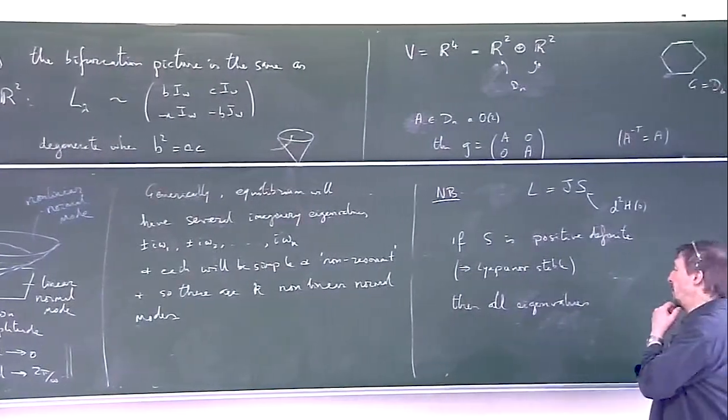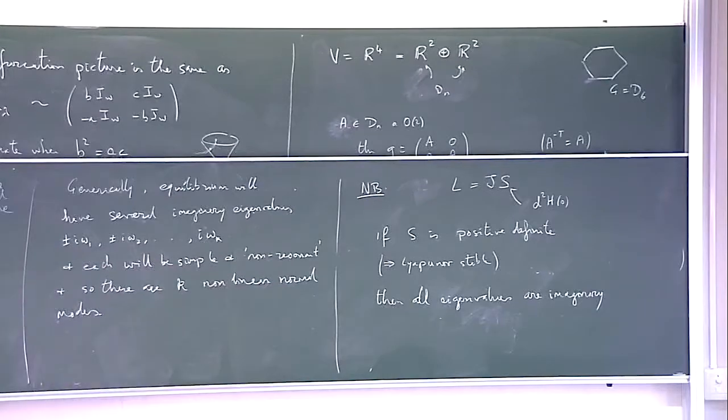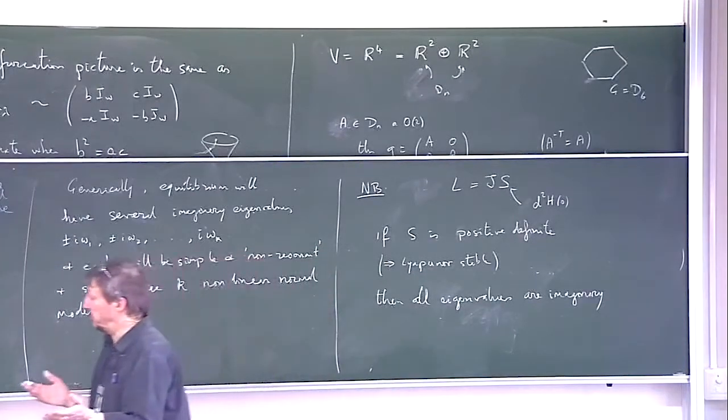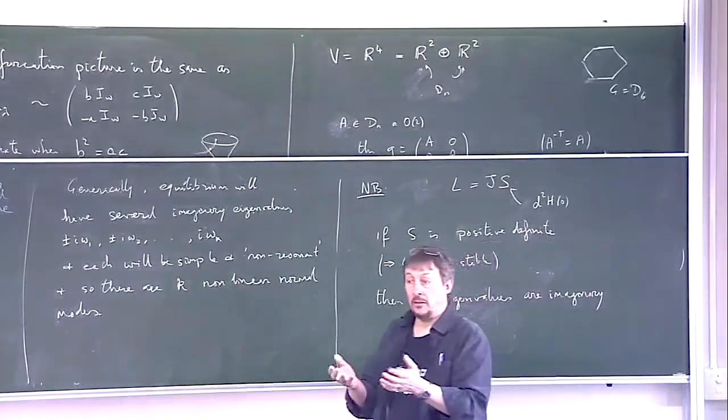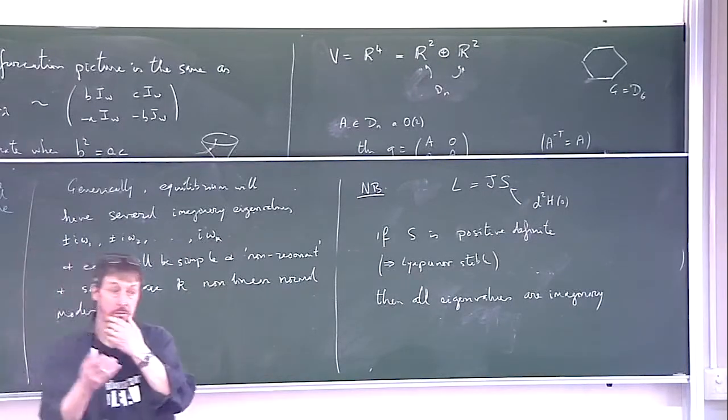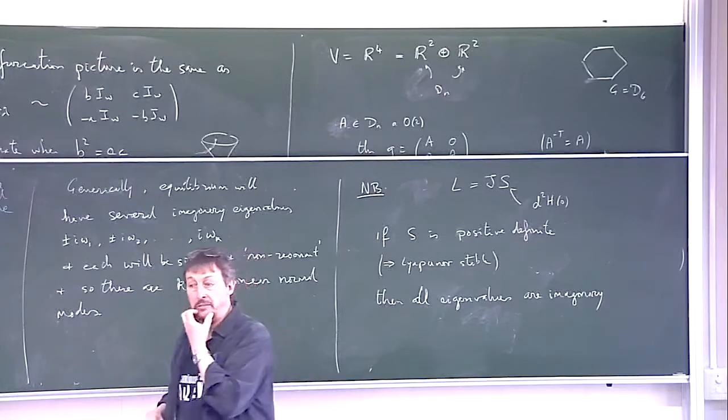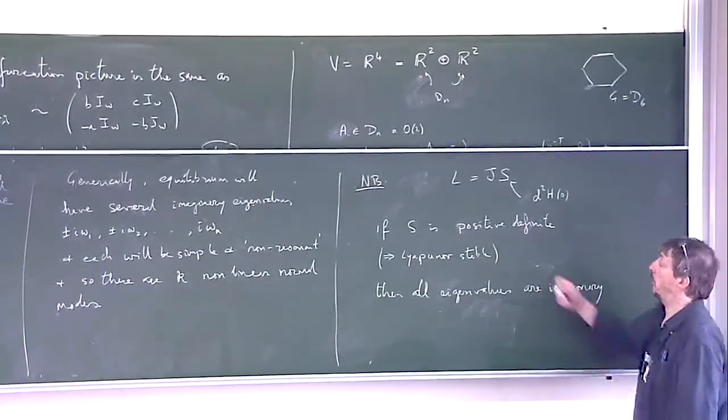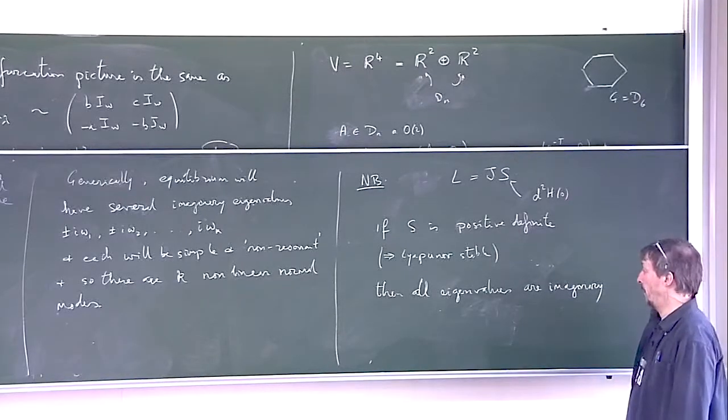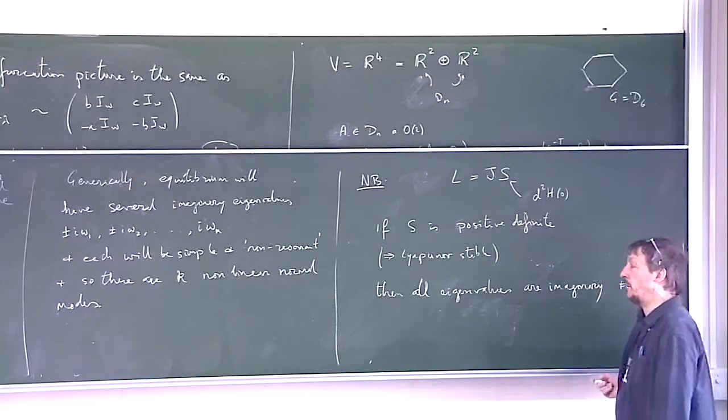So if S is positive definite, then all the eigenvalues are imaginary. So everything is about oscillations. That's because, like a Hamiltonian system, the Hamiltonian is preserved. So if S is positive definite or the Hessian is positive definite, then the level sets of the Hamiltonian are spheres or ellipsoids. So the motion cannot have a real unbounded part, so the eigenvalues can't have a non-zero real part.